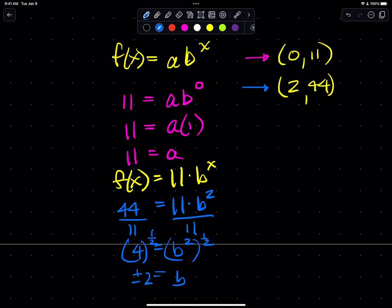But as we said, in an exponential function, b must be greater than 0. b cannot equal 1. So we disregard this negative 2 and we say that b is equal to 2.